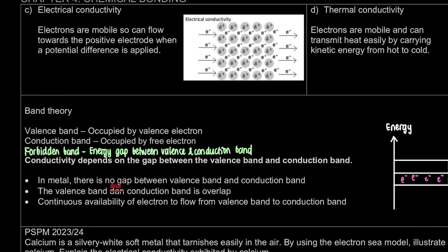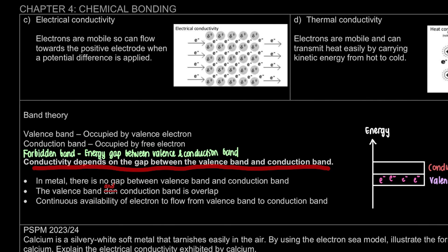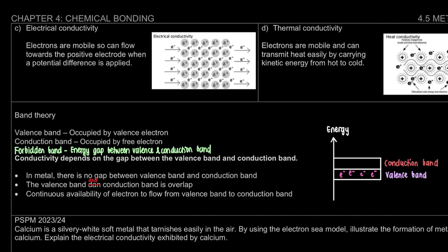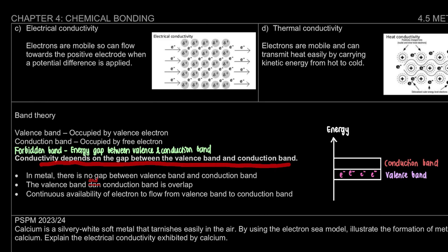We're talking about electrical conductivity. What is electrical conductivity based on band theory? The conductivity depends on the gap between the valence band and the conduction band. Here is the band diagram for the case of metal. We have the valence band with valence electrons, and the conduction band which currently has no electrons yet.